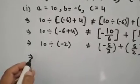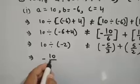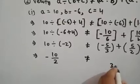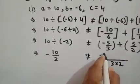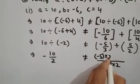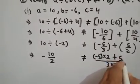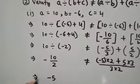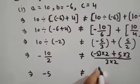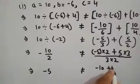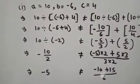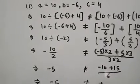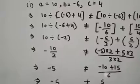In left hand side you will get minus 5 which is not equal to the LCM of 2 and 3 is 6, minus 5 into 2 plus 5 into 3. This is minus 5 which is not equal to minus 10 plus 15 upon 6.